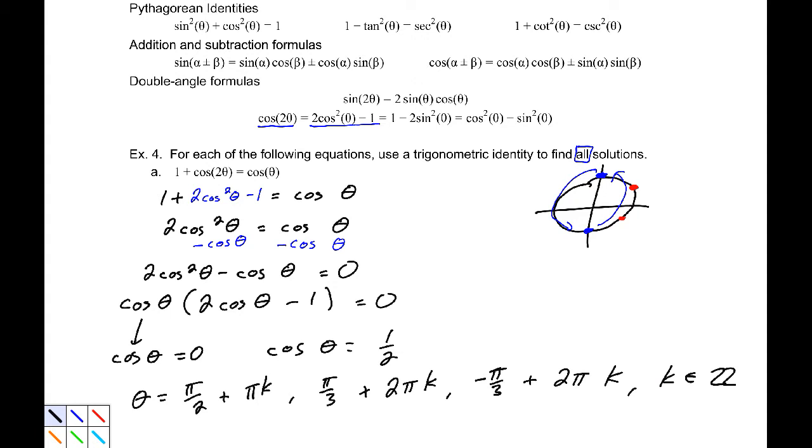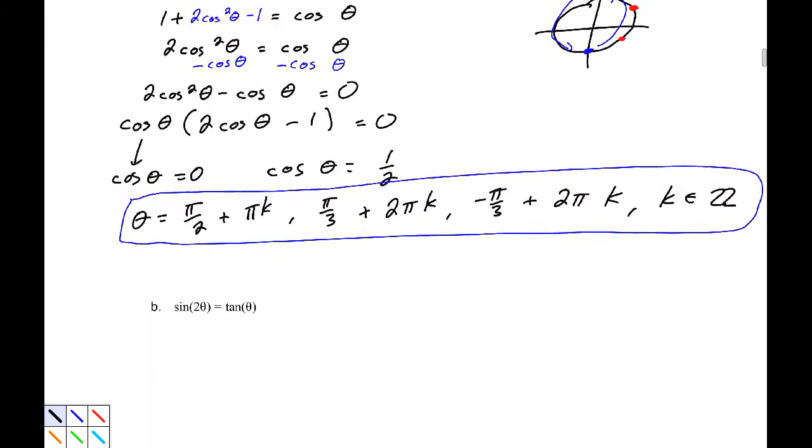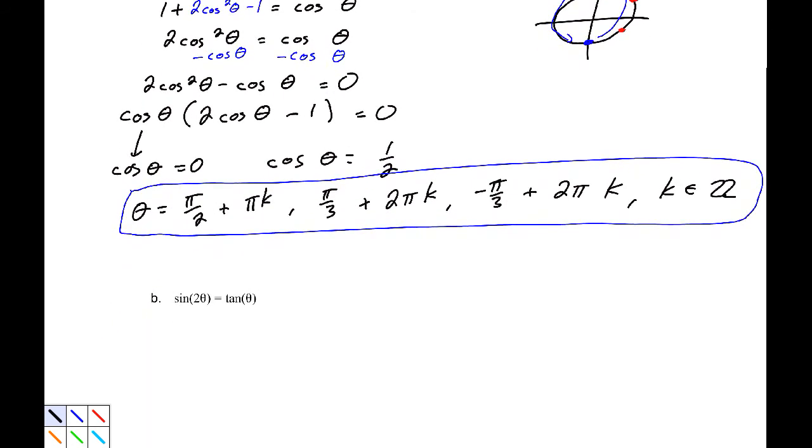And all of those are when k is an integer. Now, we have no extraneous solutions. We can check that, of course. But we don't have any extraneous solutions. So, this is our answer. Right now, part B, we have sine 2 theta equals tangent theta.